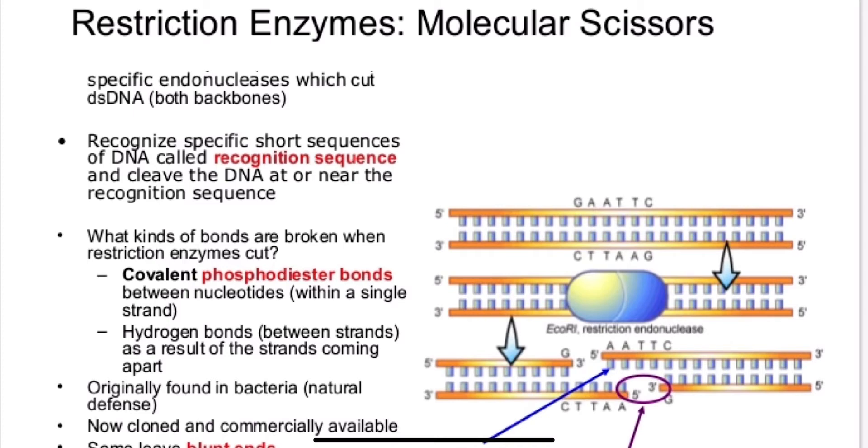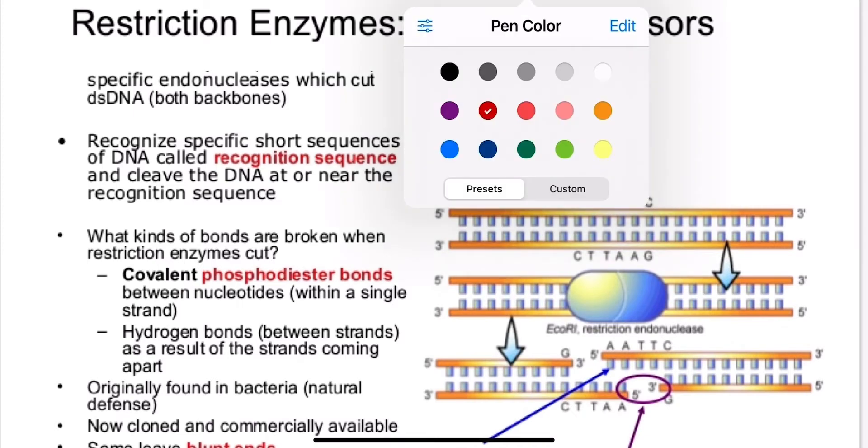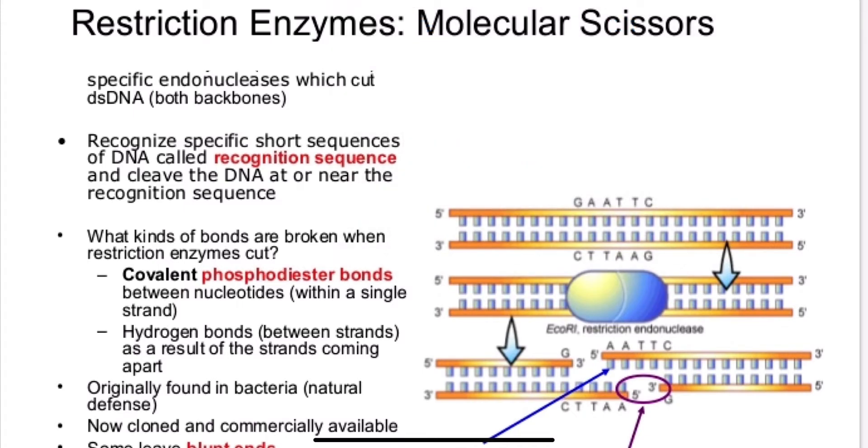So a typical recognition sequence we see discussed often is of the restriction enzyme EcoR1. So EcoR1 will cut at a specific restriction sequence, namely G-A-A-T-T-C. And what happens then is that there is the creation of what we call sticky ends on each side then of that cut.